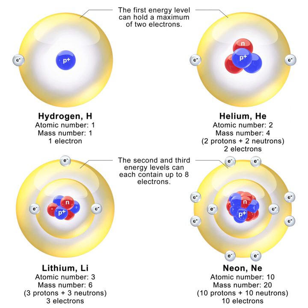Bohr extended the model of hydrogen to give an approximate model for heavier atoms, which reproduced many known atomic properties for the first time. Heavier atoms have more protons in the nucleus and more electrons to cancel the charge. Bohr's idea was that each discrete orbit could only hold a certain number of electrons; after that orbit is full, the next level would have to be used. This gives the atom a shell structure, in which each shell corresponds to a Bohr orbit. This model is even more approximate than the model of hydrogen, because it treats the electrons in each shell as non-interacting.